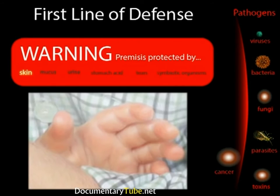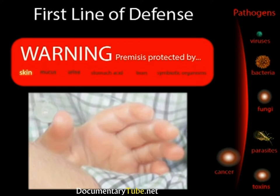The skin is part of the integumentary system. The keratin in skin cells makes skin waterproof, and it allows the skin to act as a barrier, keeping foreign invaders out of the body. Sweat washes the surface of the skin and also helps lower the pH of the skin. Those low pH environments inhibit the growth and activity of many pathogens. The sebaceous glands secrete oil, which contains antibacterial substances.